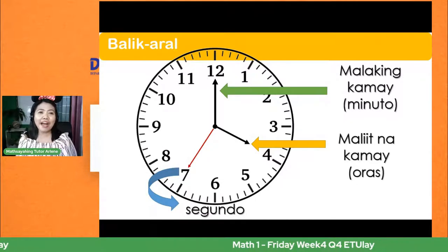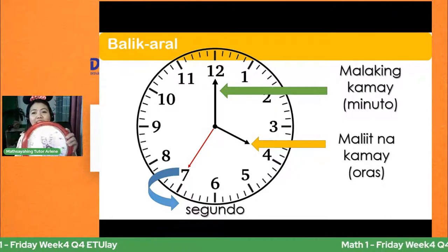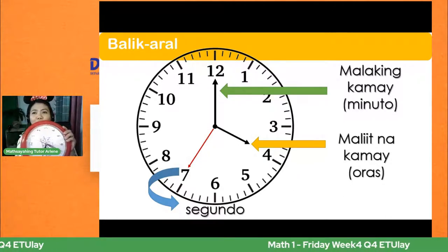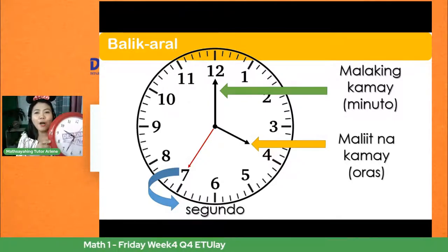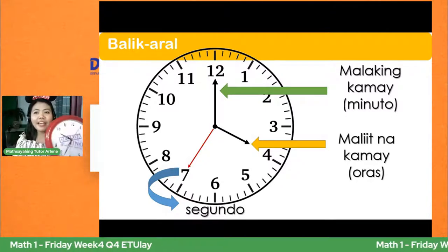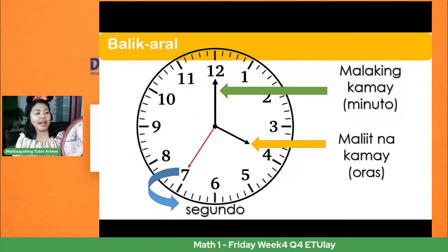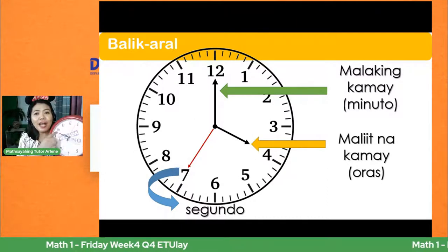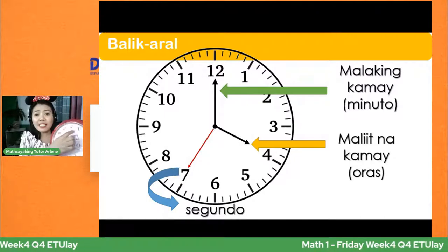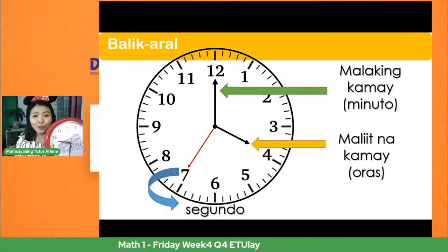Pagbalik-aralan natin ang bahagi ng orasan. Ito ang tinatawag nating analog clock. Pag sabi nating analog, hindi siya digital — mano-mano nating makikita na umiikot ang kanyang mga kamay. Meron tatlong kamay ito: merong maikling kamay, may mahaba, at may manipis pa. Yung mahabang kamay, yun ang ating minuto. At yung maikling kamay, yun ang ating oras. At yung manipis na kamay na makikita sa analog clock, yun ang tinatawag nating segundo.